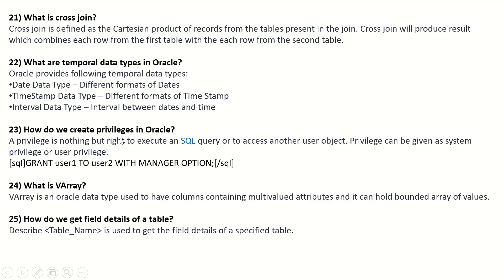How do we create privileges in Oracle? A privilege is the right to execute an Oracle query or to access another user's object. A privilege can be given as a system privilege or a user privilege. Example: GRANT user1 TO user2 WITH MANAGER OPTION. What is VARRAY? VARRAY is an Oracle data type used to have columns containing multi-valued attributes, and it can hold a bounded array of values.